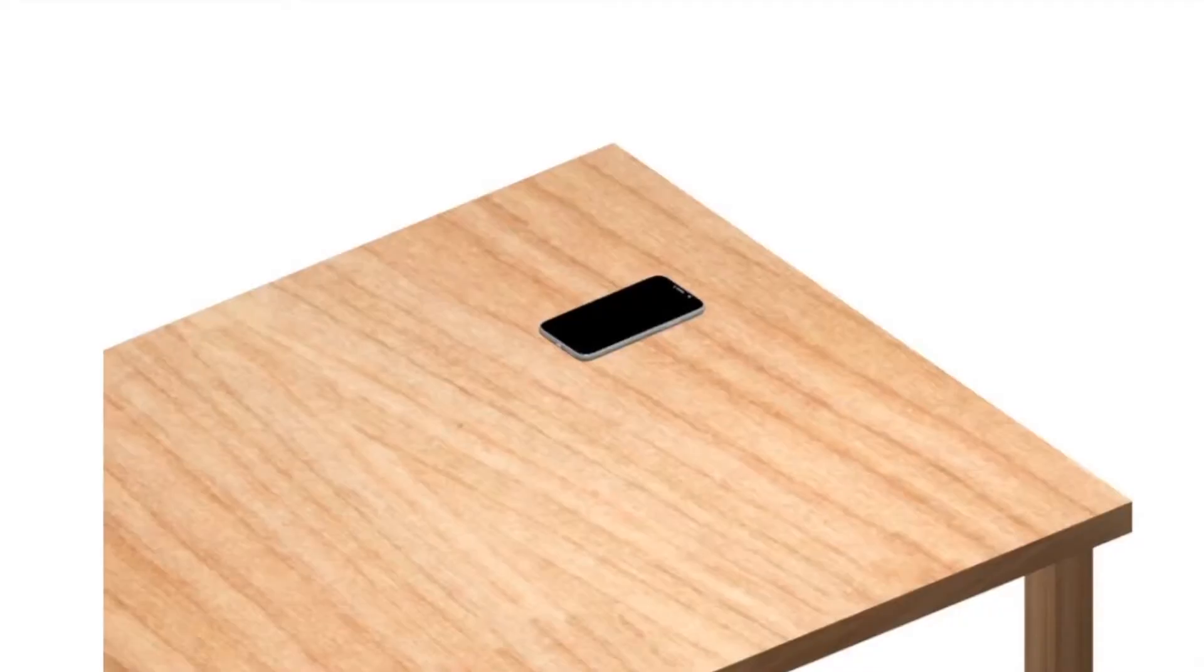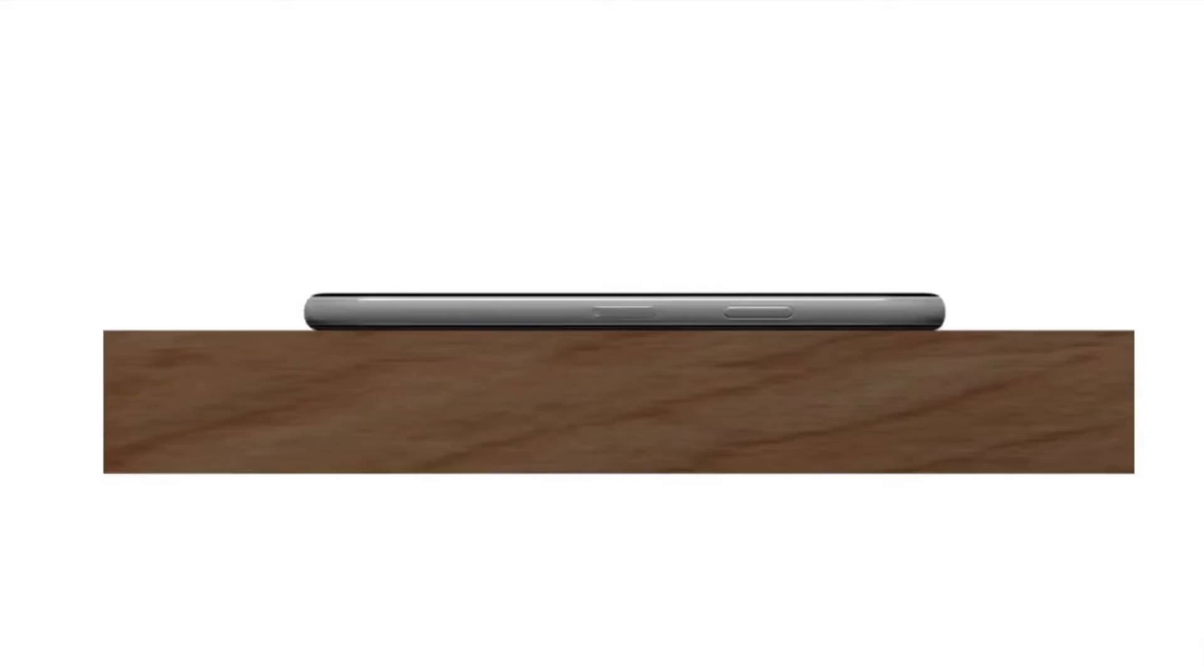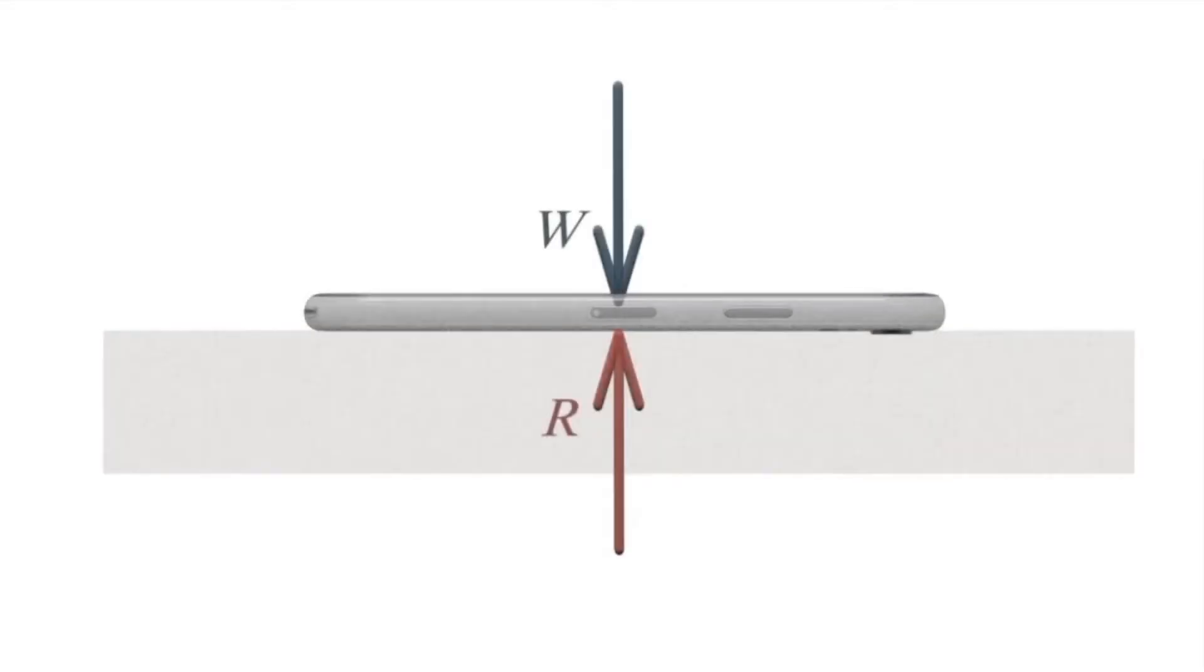As an example, look at the cell phone sitting on a table. The force of gravity pulls the phone downward. The equilibrium of forces acting on the phone is a topic studied in statics, as long as the phone remains stationary on the desk.